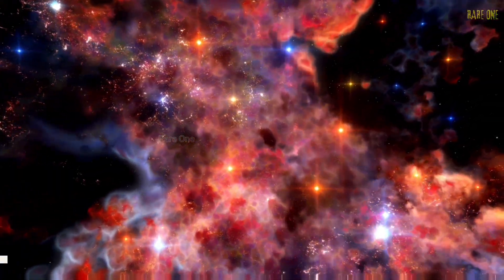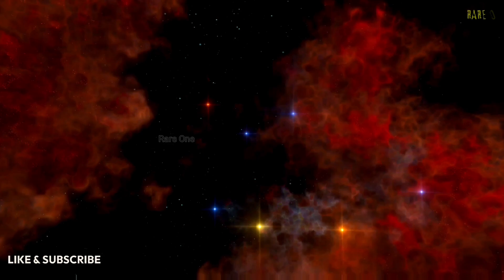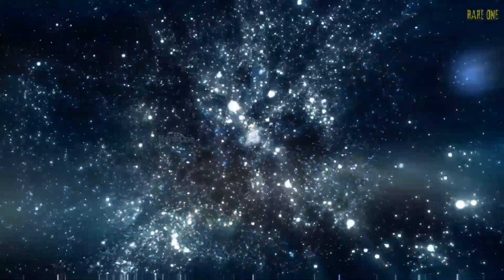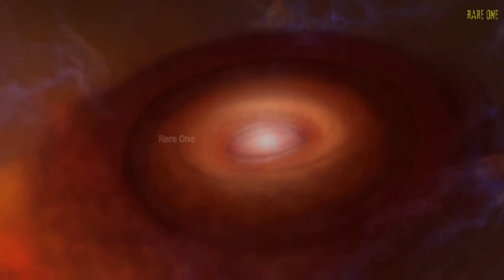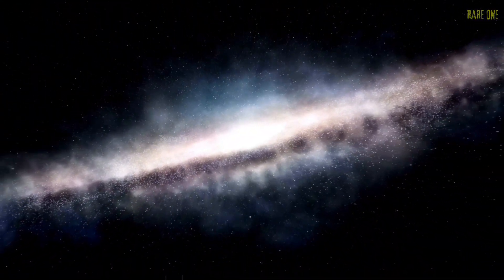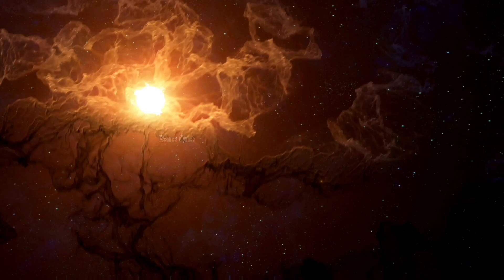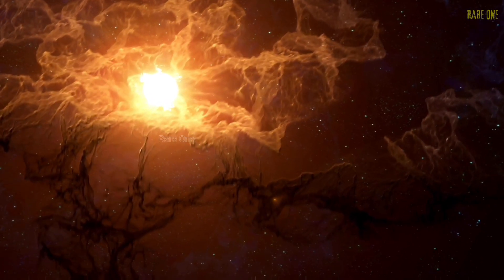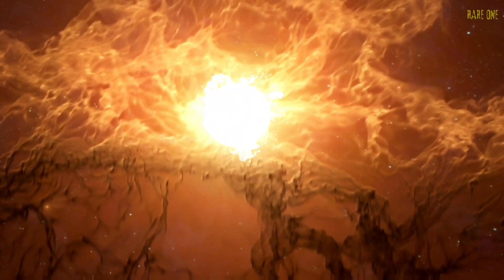Our sun likely formed alongside thousands of other stars in a massive stellar cluster. But here's something bittersweet: most star clusters don't stay together. Within a billion years, nearly all of them break apart, scattering their stellar children across the galaxy. This means our sun has thousands of siblings out there, stars born from the same cosmic cloud, forged in the same stellar nursery. They're now scattered across the Milky Way, each carrying the same cosmic DNA—the same age, the same mixture of elements. Astronomers sometimes wonder: when we find a star with the same age and elemental composition as our sun, could this be one of our long-lost siblings? It's a beautiful thought that somewhere out there are stellar brothers and sisters that share our cosmic heritage.